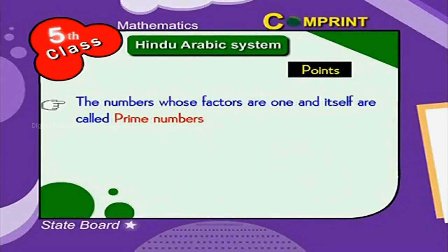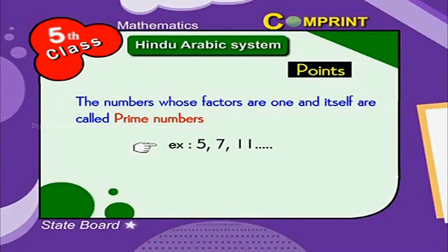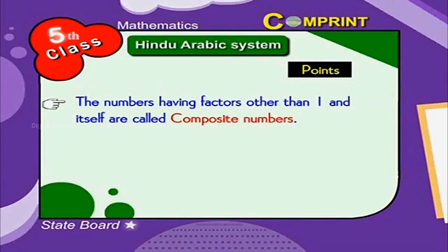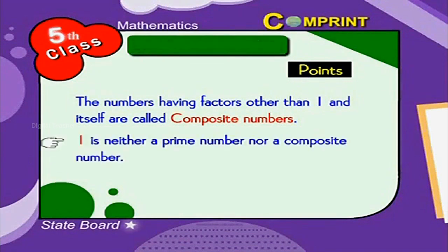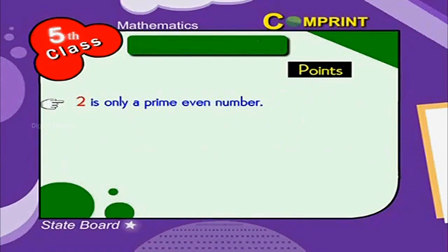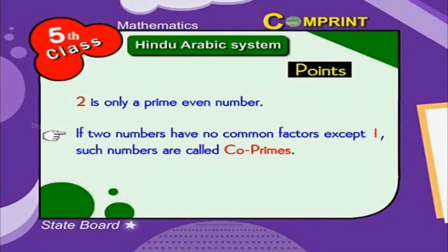The numbers whose factors are 1 and itself are called prime numbers — for example, 5, 7, 11. The numbers having factors other than 1 and itself are called composite numbers. 1 is neither a prime number nor a composite number. 2 is the only even prime number. If numbers have no common factors except 1, such numbers are called co-primes.